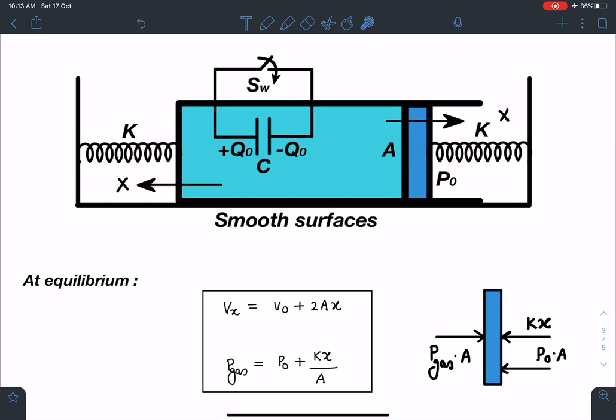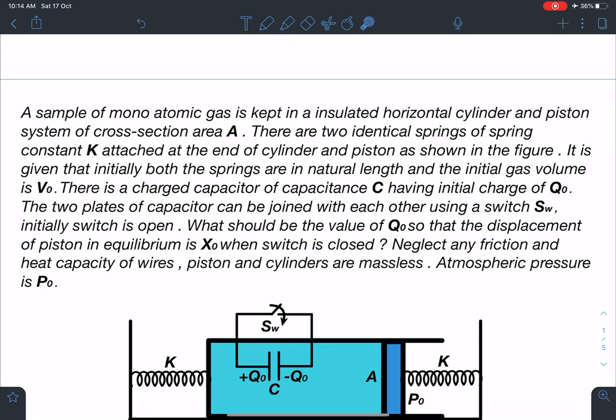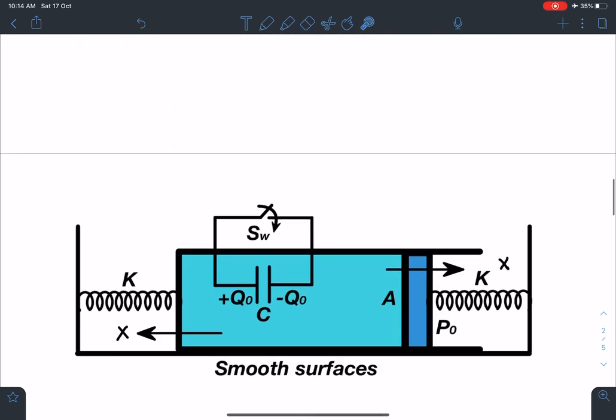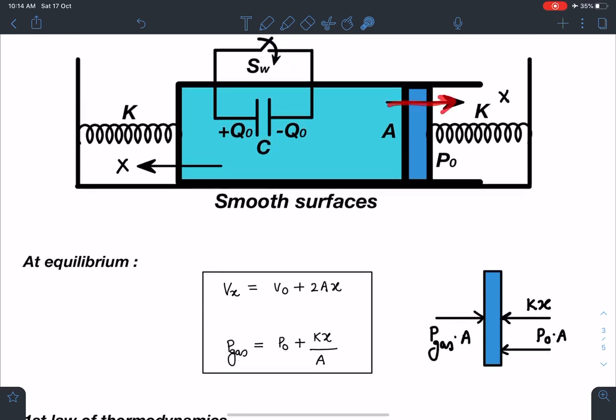So let's talk about this equilibrium position. Volume of gas I can write as V0 plus 2Ax. V0 is the initial volume. Now since this is going by distance of x, this is also going by distance of x, so new volume at x will become V0 plus 2Ax. I am taking that x as equilibrium x0 also I can write.